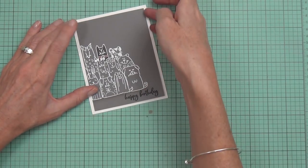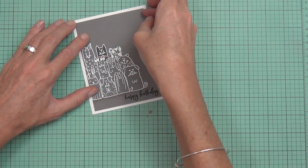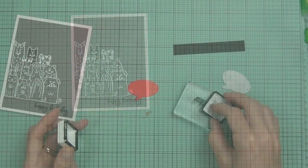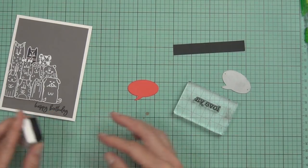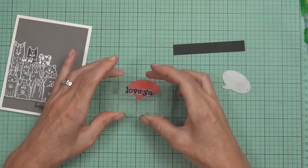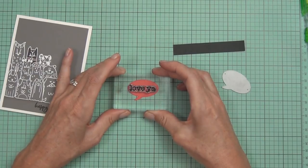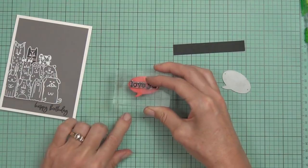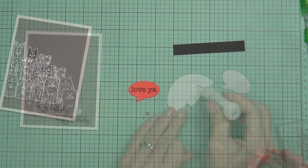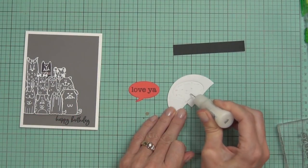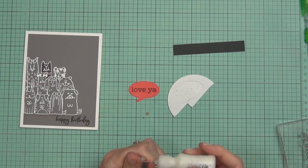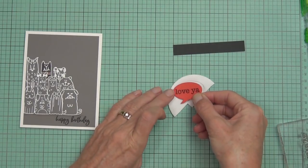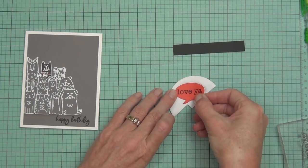I just decided to add it with some ATG adhesive directly to the front of the card. What I often do if I misstamp a sentiment or I'm not happy with the placement is come in and add a sentiment over top and pop it up, or put it on different color cardstock. That tends to work well, but what I did differently today is I decided to add a speech bubble sentiment.